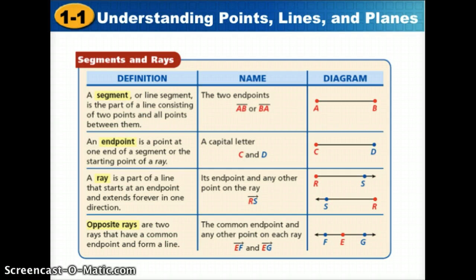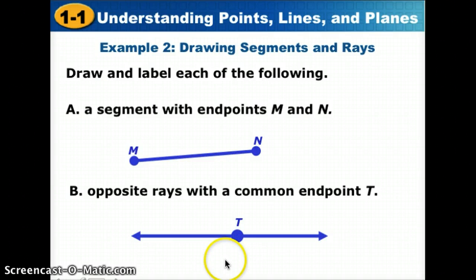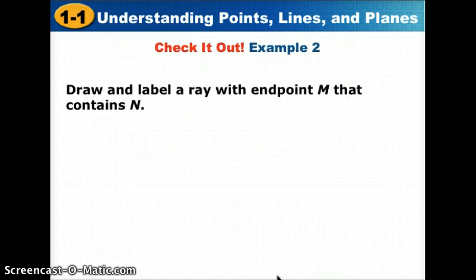Here are a few examples of how we might draw our segments and rays. A segment with endpoints M and N would stop on two sides. Opposite rays with the common endpoint T would both start at T and go in opposite directions. You try this one. Start by creating a ray with an endpoint M. If it contains N, we put a point N on that ray as well.